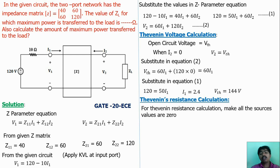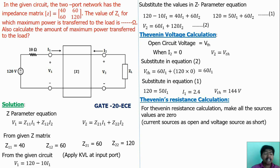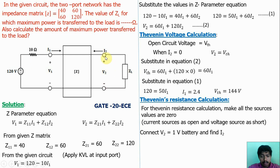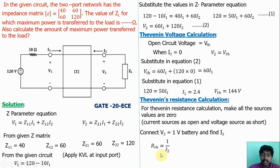Deactivating means we short the voltage source and open the current source, so that the source values become zero. Here only a voltage source is present, so we short it. Then connect a 1-volt battery at the load side. RTH = V/I2 = 1/I2, since VT = 1 V. Find I2.